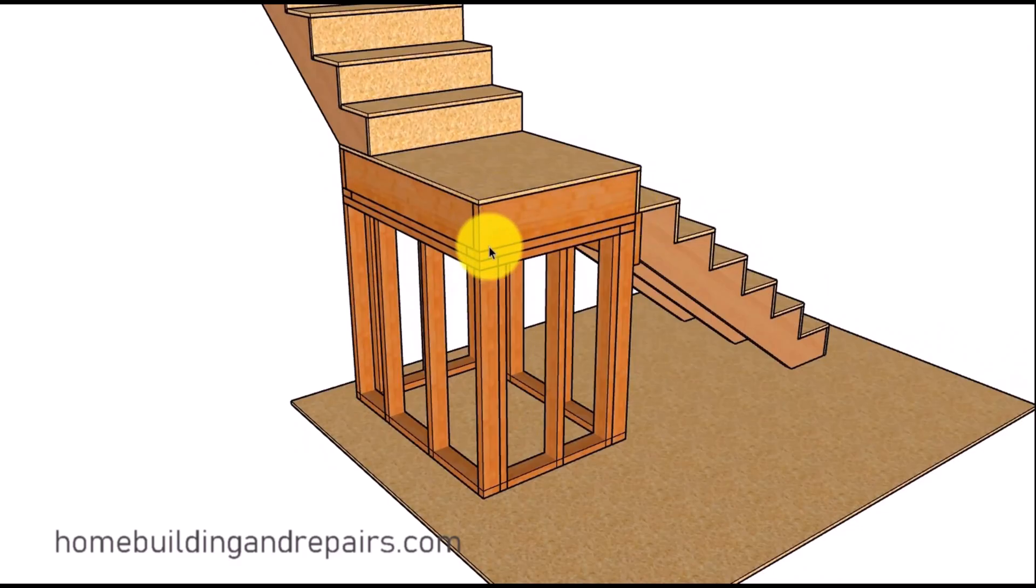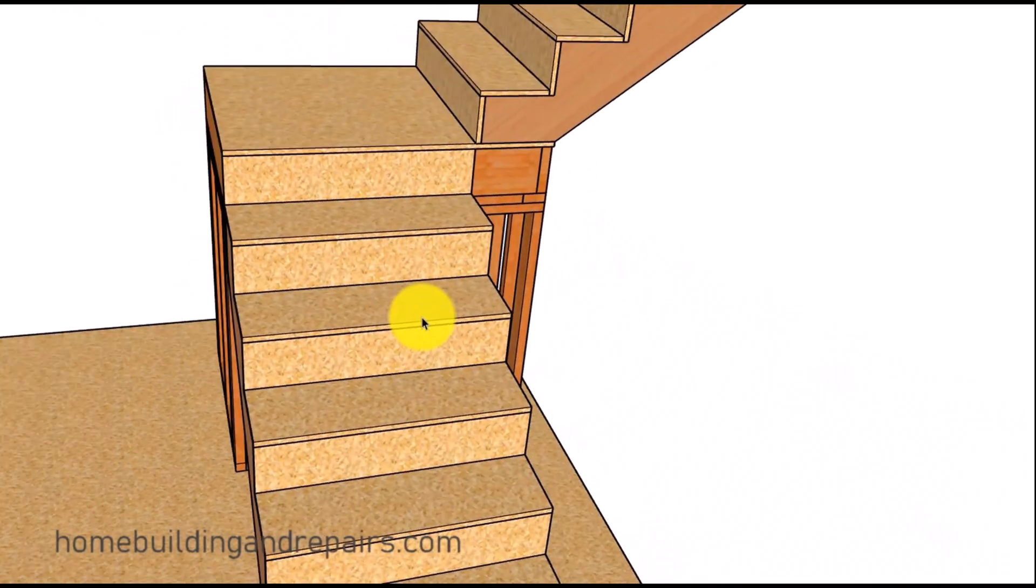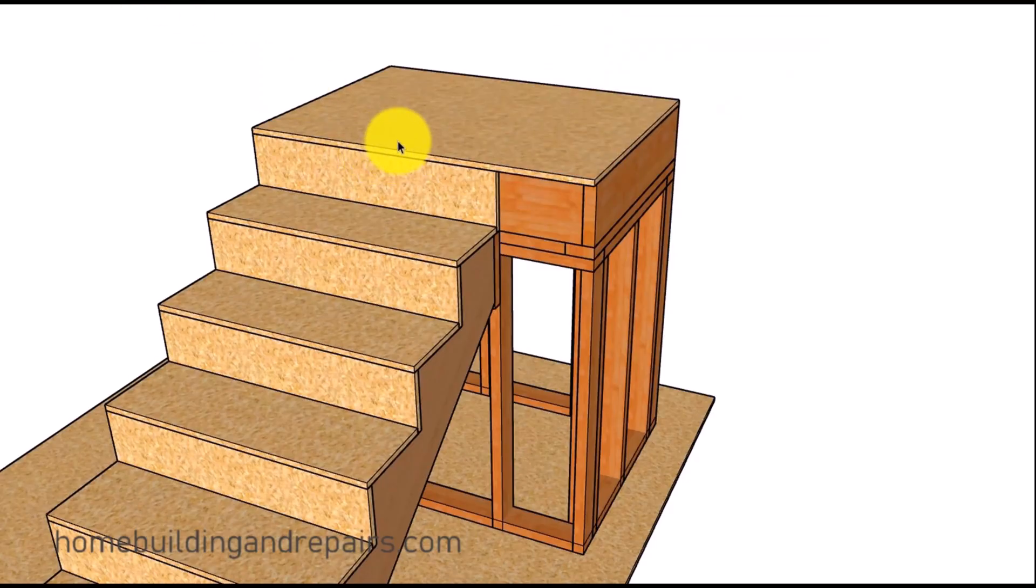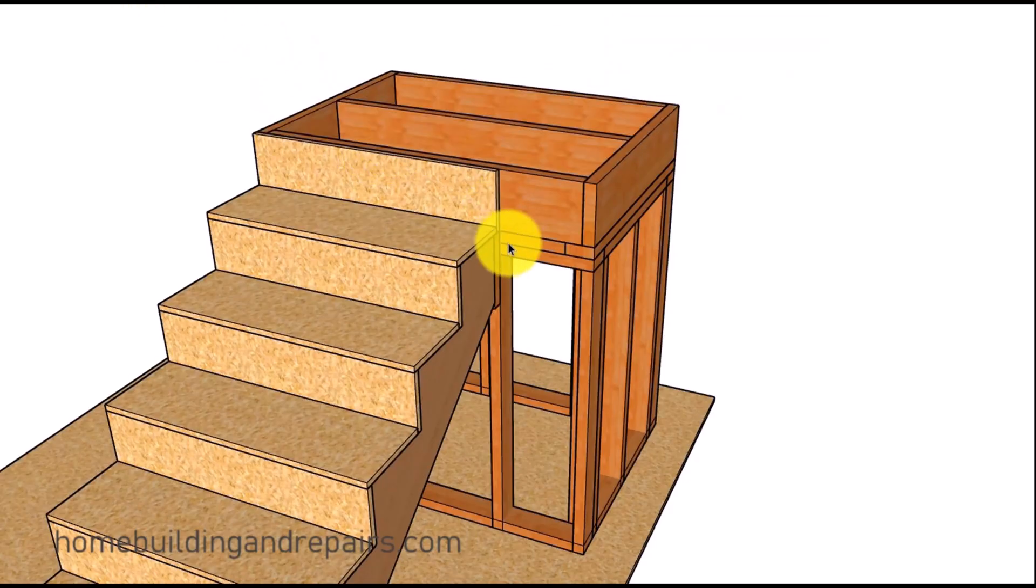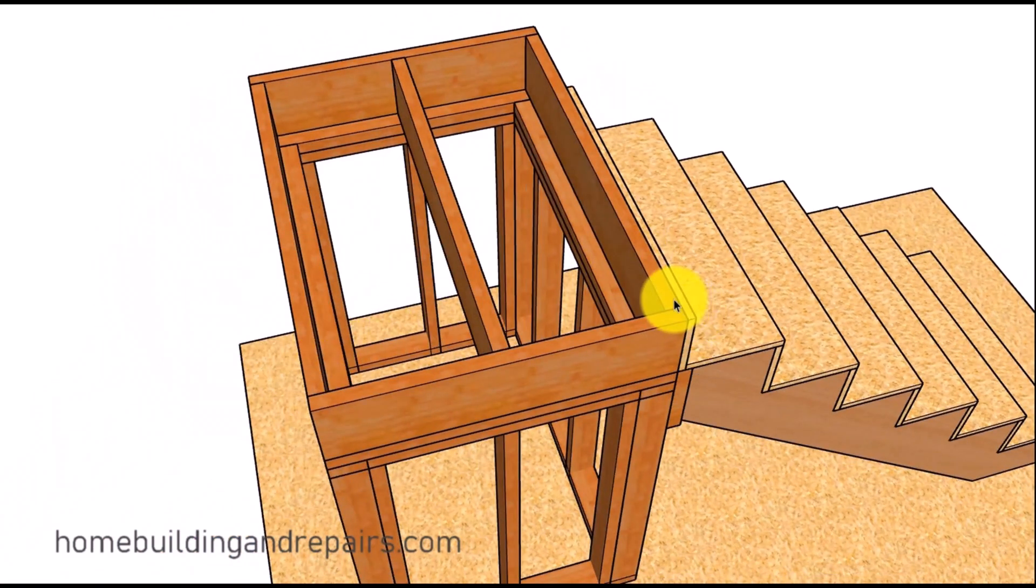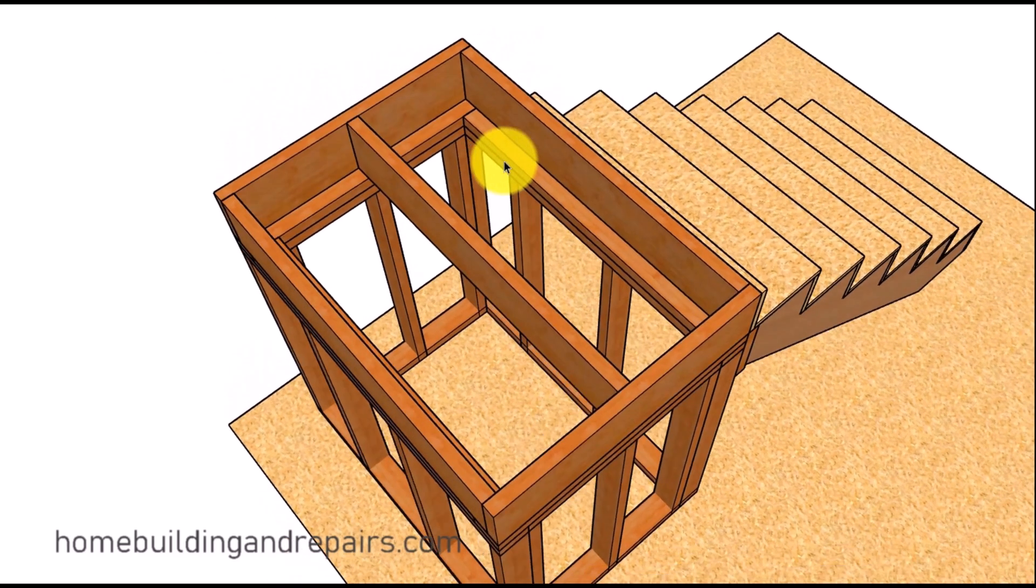Number one, framed walls usually provide an excellent framework that can easily support the weight of the landing, people, and any furniture or other objects placed on it. This is especially important for landings that experience heavy traffic in commercial or industrial buildings. The walls also distribute the weight of the landing more evenly across the foundation, preventing structural load concentration and potential sagging or failure.